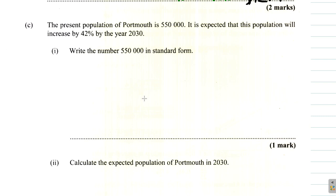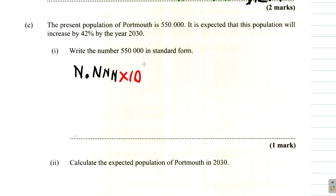Remember, when you write a number in standard form, you take the first non-zero digit — call it N — then the decimal point, then the remaining digits. To make it equal to the original number, you multiply by 10 raised to a power P.